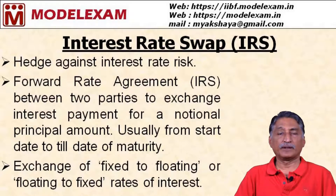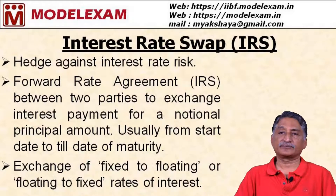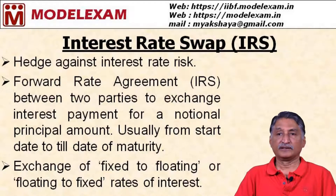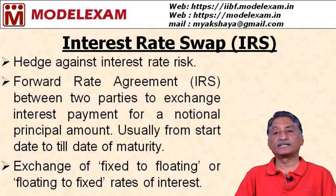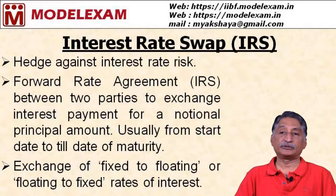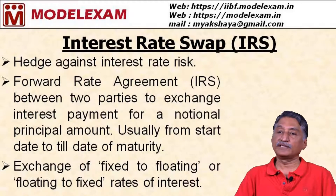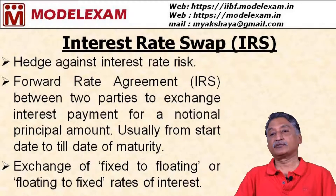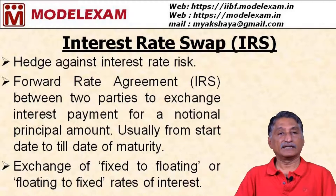Interest rate swap, called IRS, is another derivative product. It is a hedge against interest rate risk. It is a forward rate agreement between two parties to exchange interest payments for a notional principal amount, usually from a start date till the date of maturity. The exchange can be fixed to floating, floating to fixed, or floating to floating rate of interest.